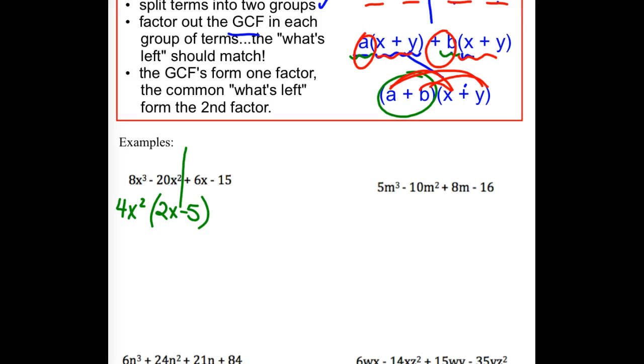Now, I do the same exact thing with the second two pieces. What's common in a 6x and a 15? A 3? If I pull a 3 out, what's left? 2x minus 5. Does grouping work? Is the what's left piece match? Yes. In both cases, we had a 2x minus 5 left. So, that is going to come down as one of my factors. And the pieces that I pulled out front are going to form the other factor. So, I have a 4x squared and a positive 3. And again, how could we check that? We could foil it back out.